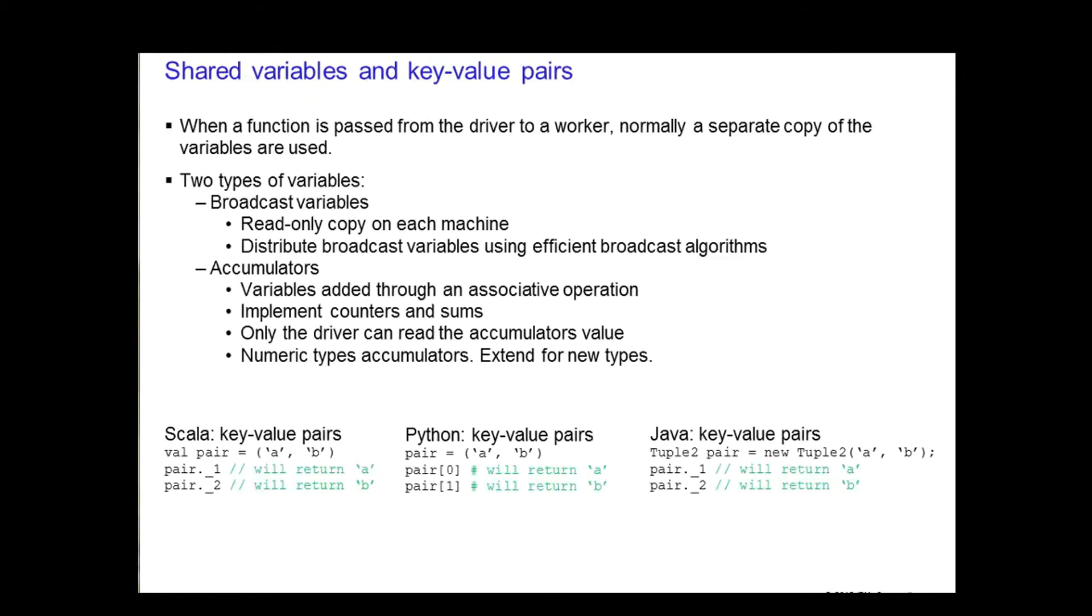On these last two slides, I'll talk about Spark's shared variables and the type of operations you can do on key value pairs. Spark provides two limited types of shared variables for common usage patterns: broadcast variables and accumulators. Normally, when a function is passed from the driver to a worker, a separate copy of the variables are used for each worker.